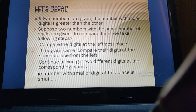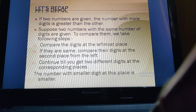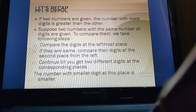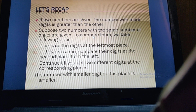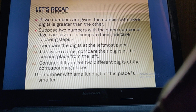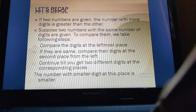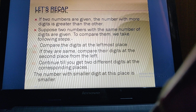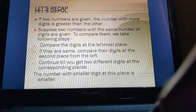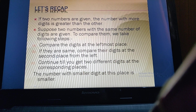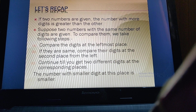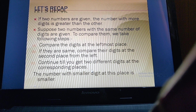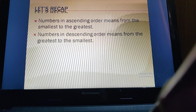If two numbers are given, the number with more digits is greater than the other. For example, a four-digit number is always greater than a three-digit number. If two numbers have the same number of digits, we compare the digits at the leftmost place — starting from the thousands place — and continue comparing until a difference is found. The number with the smaller digit at that place is the smaller number.